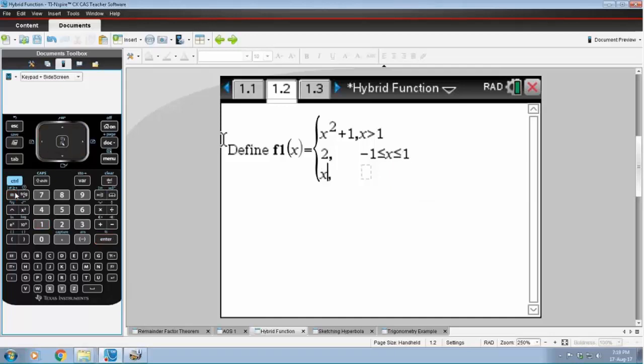Now move the cursor into the correct spot. Here I'm going to type in x plus two. Press the right arrow. And now we're going to type in x is smaller than minus one.